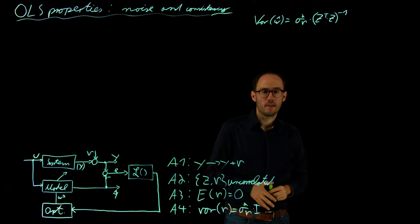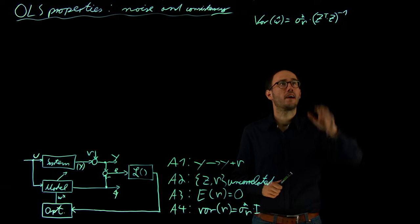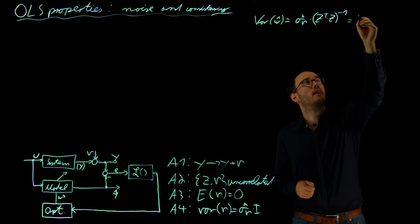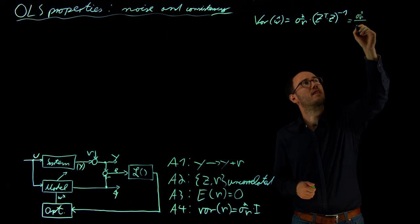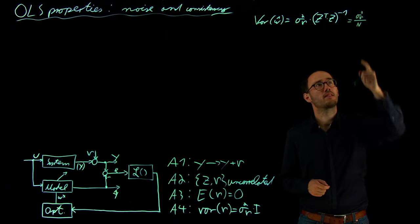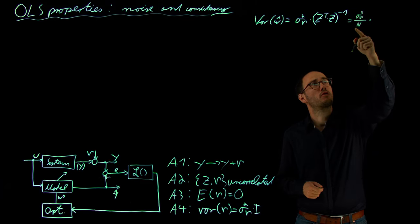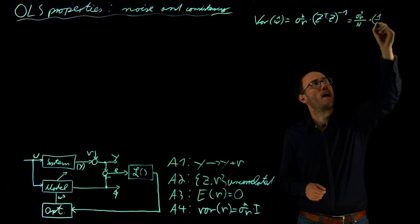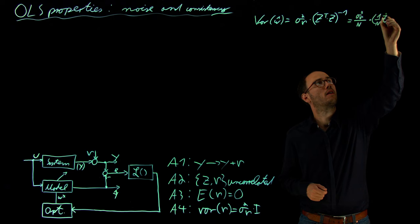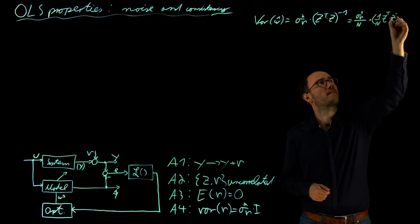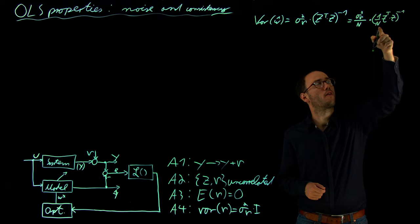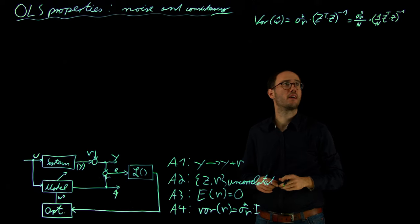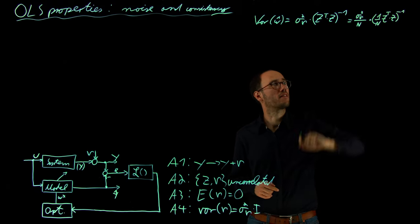In order to investigate the impact of the amount of data, I can rewrite this equation without manipulating it by adding sigma square over n, where n is the number of data samples. I correct this by adding one over n into the parenthesis term. As I calculate the inverse of one over n, this is inverted and will compensate for the one over n in front of the parenthesis, so I haven't manipulated the equation.